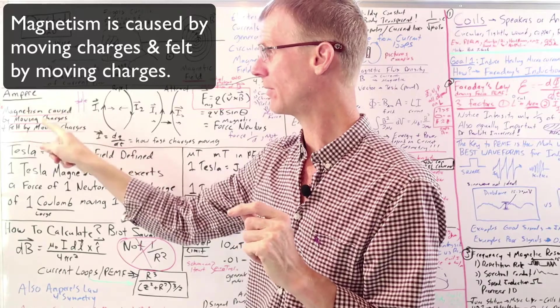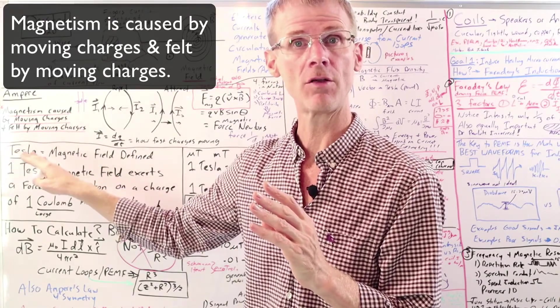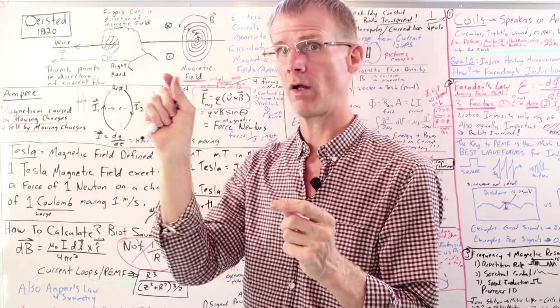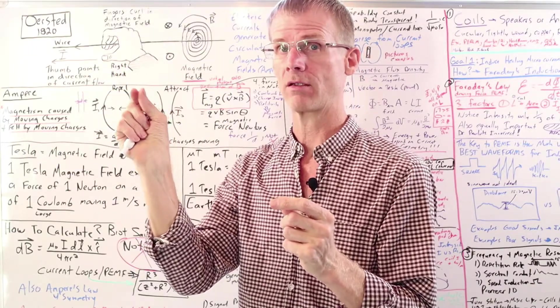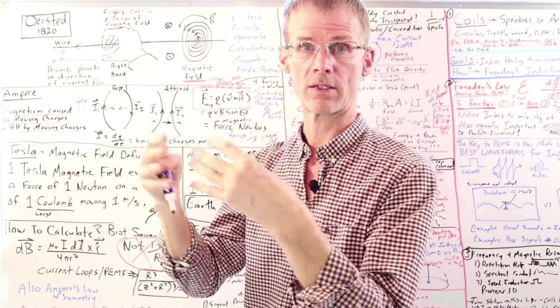He found that magnetism is caused by moving charges and magnetism is felt by only moving charges. So if you have a current through a wire and a static charge, there's no magnetism. It's only when you have two objects with moving charges that there's an interaction with the magnetic field.